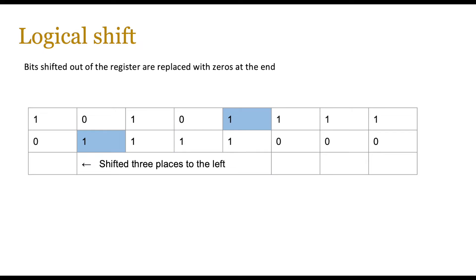For logical shifts, moving left and right is of vital importance. For example, with an 8-bit register containing 1 0 1 0 1 1 1 1, if you shift everything three places to the left, the first three digits 1 0 1 fall out of the register. The remaining bits 0 1 1 1 1 shift left, and the three vacated places on the right are replaced with zeros. You can do this going both left and right — going right, you remove bits from the right end and add zeros on the left.